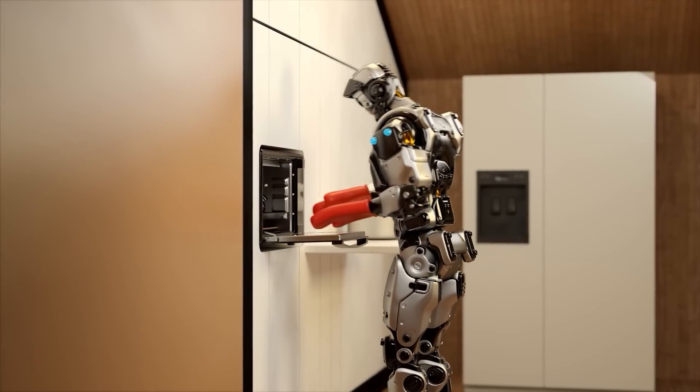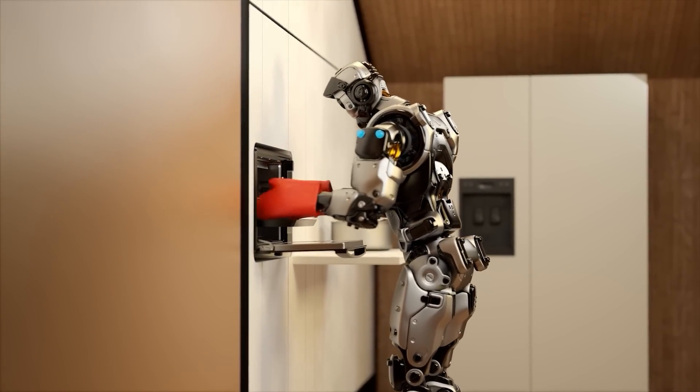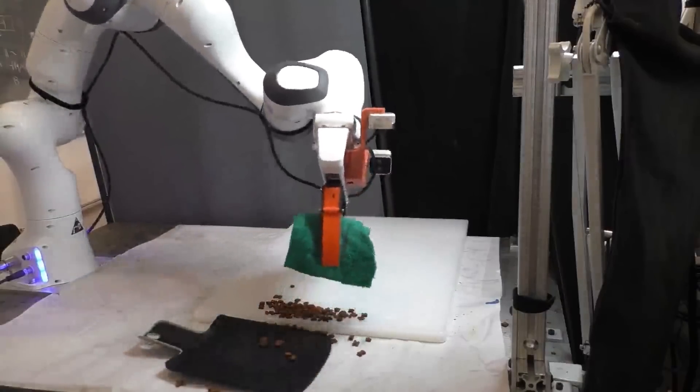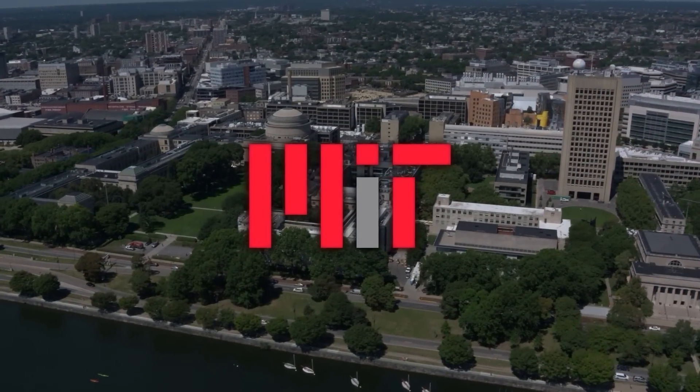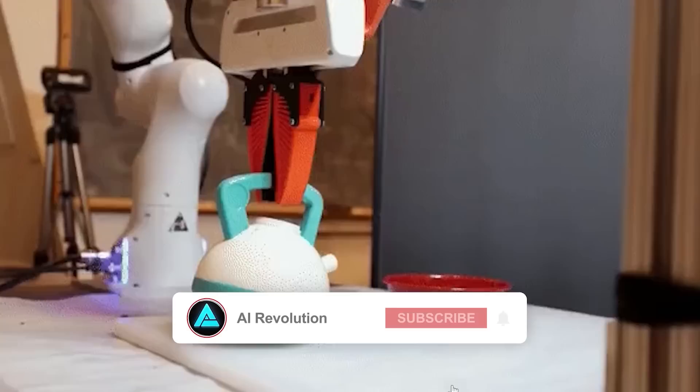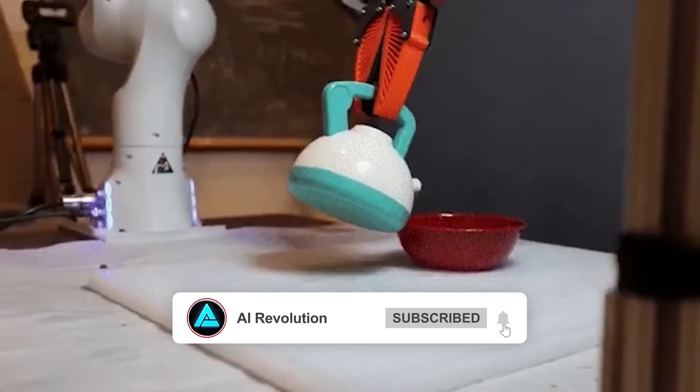This broad pre-training means that when they need the robot to handle a new task, it can adapt much faster because it's already been exposed to a wide range of data. Now, if you think about it, the future of robotics hinges on having robots that aren't just good at one thing but can handle multiple tasks, just like humans.